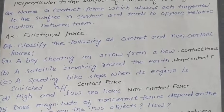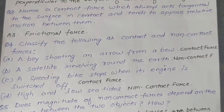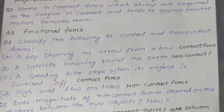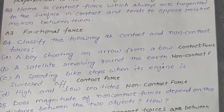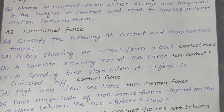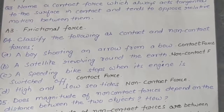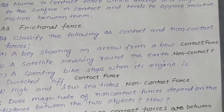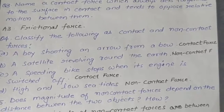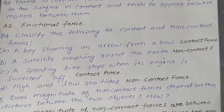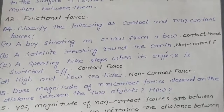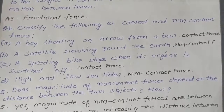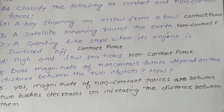Question 4: Classify the following as contact or non-contact forces. (a) A boy shooting an arrow from a bow — contact force. (b) A satellite revolving around the earth — non-contact force. (c) A speeding bike stops when its engine is switched off — contact force. (d) High and low sea tides — non-contact force.